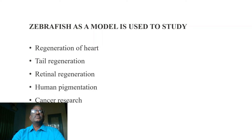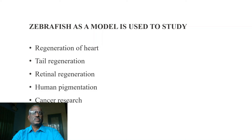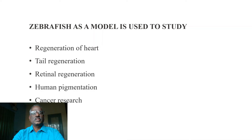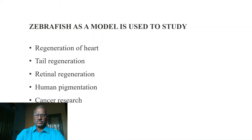So the zebrafish can be used as a model to study the regeneration of the heart, regeneration of the tail, regeneration of the retina, and related functions. It can mainly be used for cancer research and also for autism.